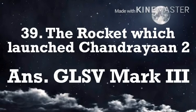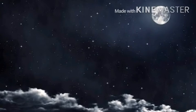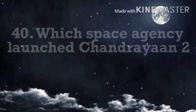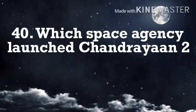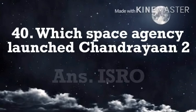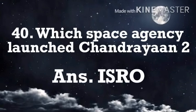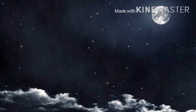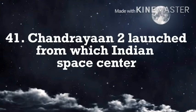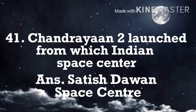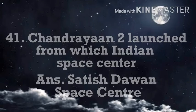The rocket which launched Chandrayaan 2 — GSLV Mark 3. Full form of GSLV — Geo-Synchronous Satellite Launch Vehicle. Which space agency launched Chandrayaan 2? ISRO. Chandrayaan 2 was launched from which Indian space center? Satish Dhawan Space Center in Sriharikota.